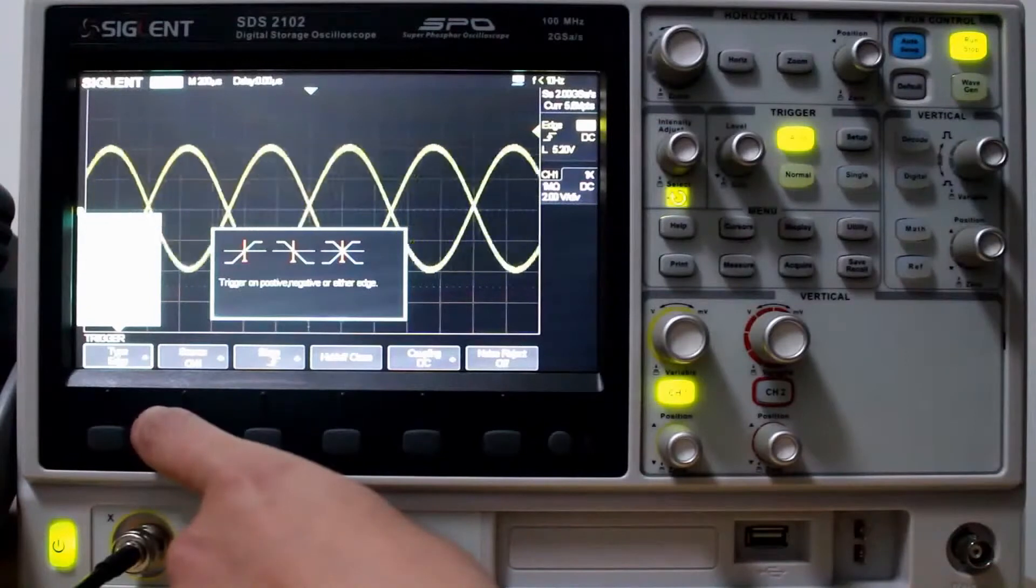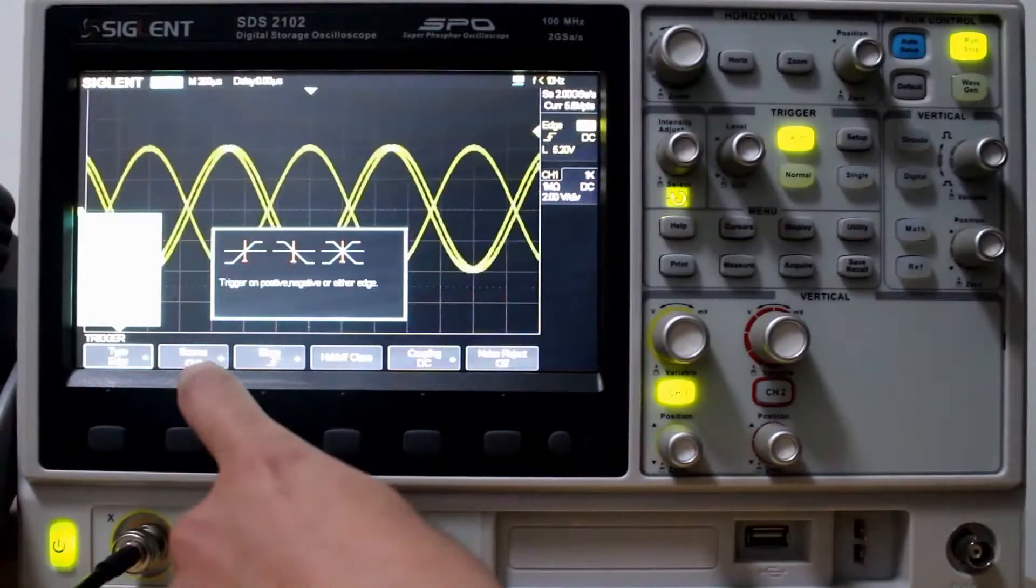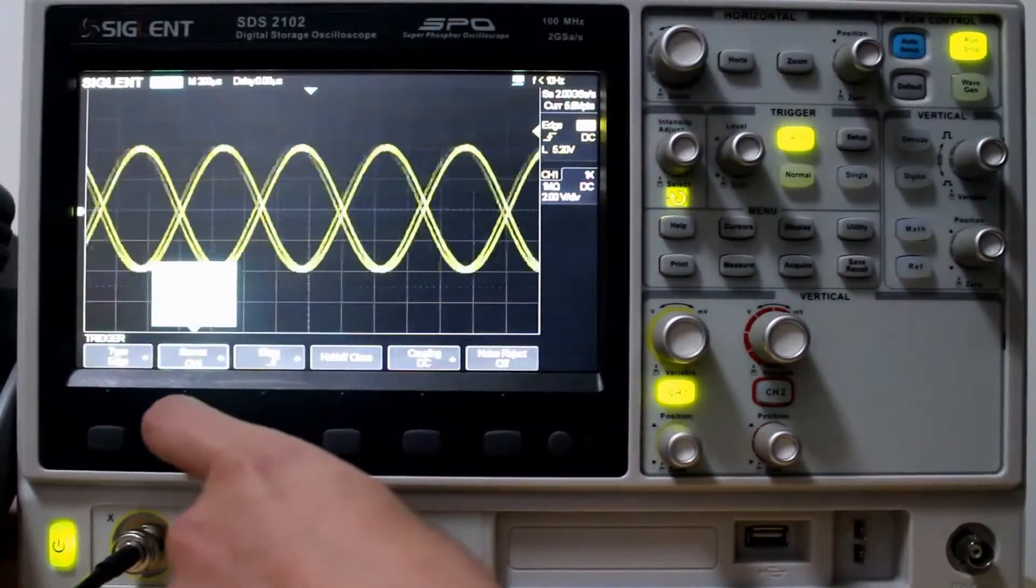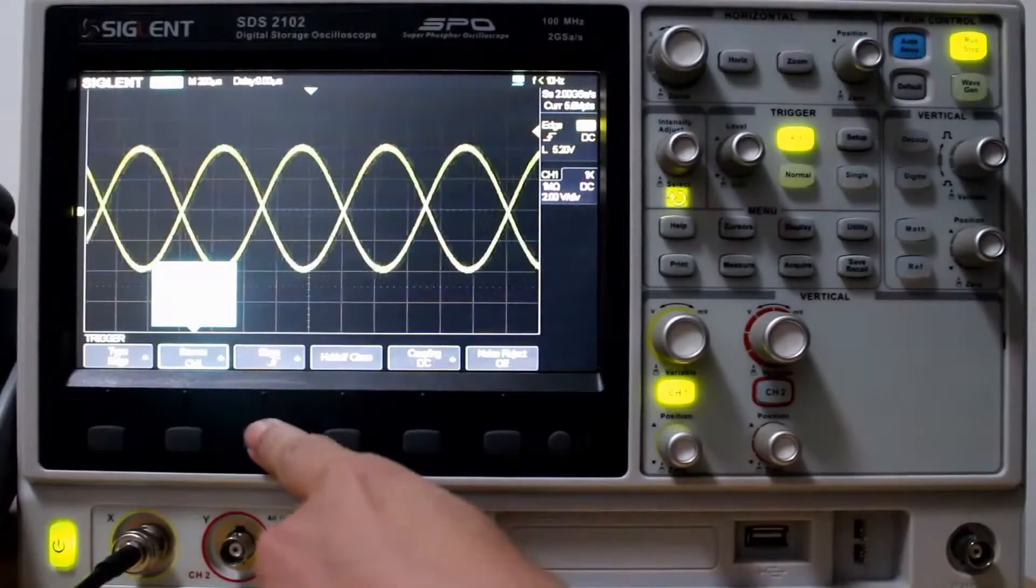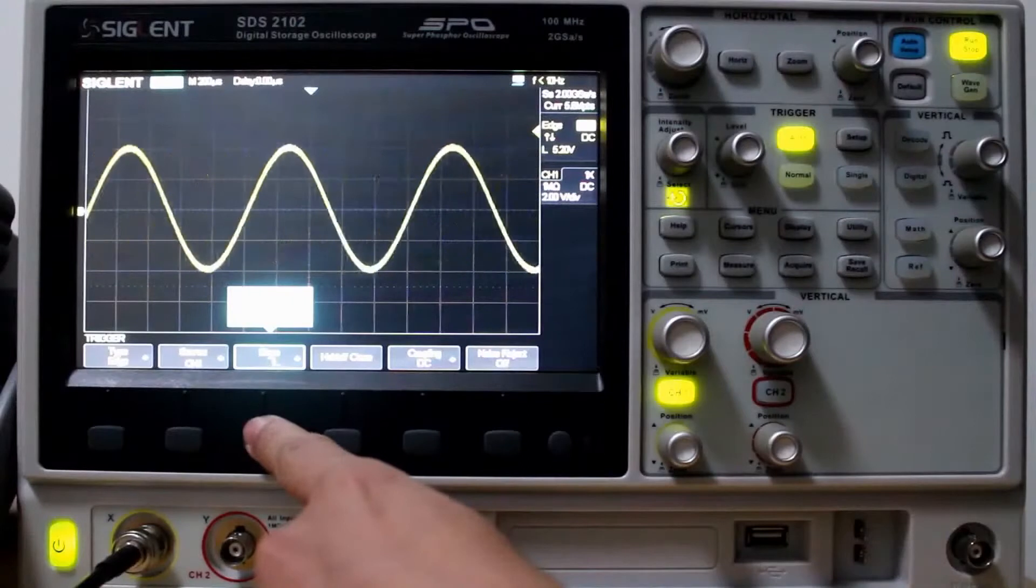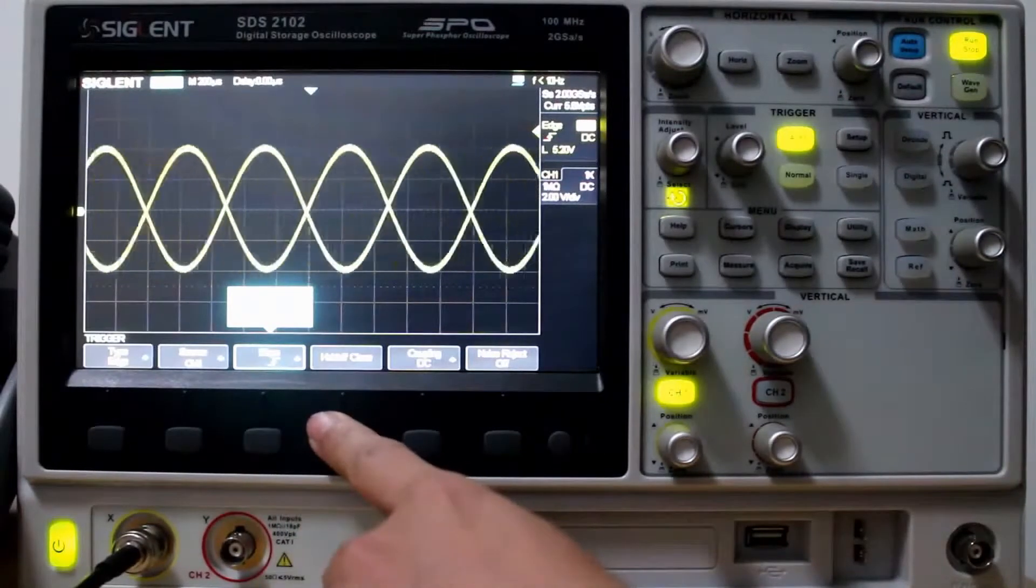We're going to set it to Edge. Then we're going to set our Source to Channel 1. Yes, already there. Then we set the Slope. We can do Rising, Falling, or both. Rising and Falling. We're going to go to Rising.